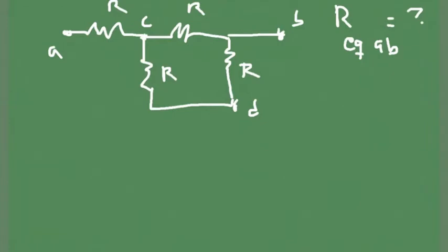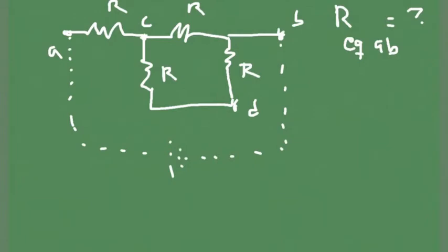The equivalent resistance between A and B is the resistance you would encounter if you tried to set up a current between these two points — if you put a battery there. So how do we calculate that? One step at a time. You look at the circuit and see if you can identify two resistors that are either in series or in parallel, because you can simplify the circuit by replacing those two resistors with only one. Then you redraw your circuit with that simplification and look again — is there anything in series or in parallel?